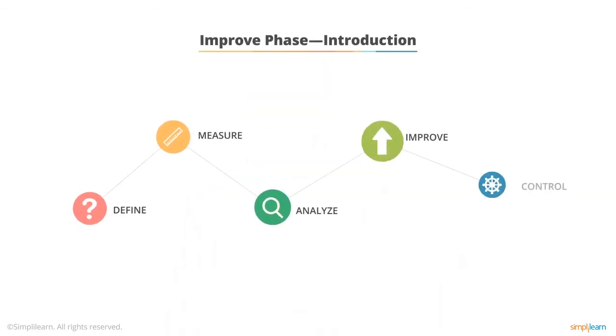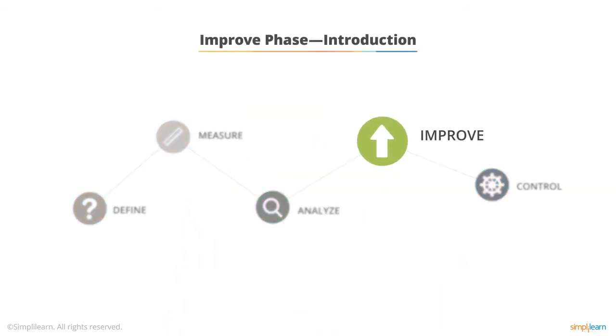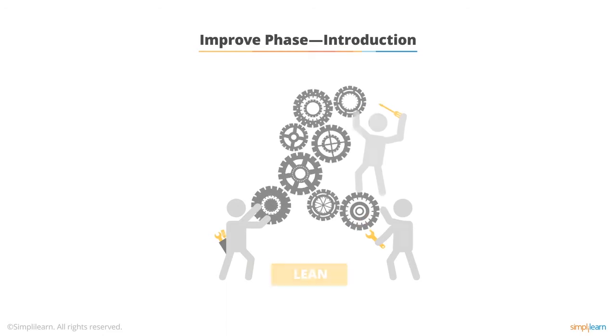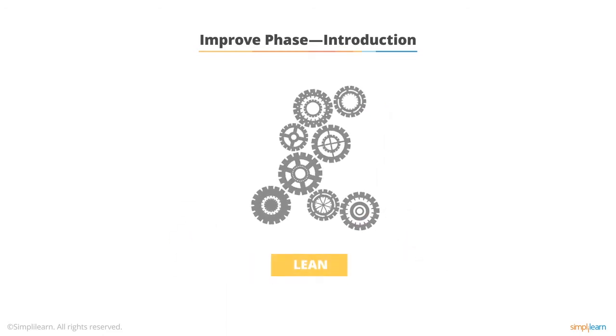Welcome to the Improve phase. The main objective of Improve is to develop solutions linked to the critical X's identified from the Analyze phase. The purpose is to determine where the problems are coming from in order to create solutions to fix them. Using lean techniques will help find ways to streamline the process. If the Analyze phase is like discovering factors that slow us down from reaching the final destination, the Improve phase is like finding the most effective route or shortcuts to ensure we reach the goal successfully.